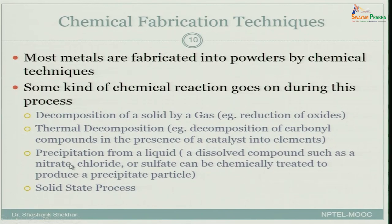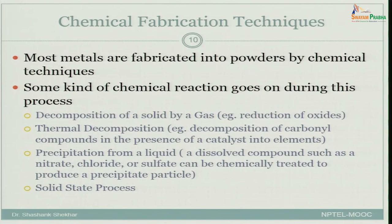Another chemical method is precipitation from a liquid. A dissolved compound such as nitrate, chloride, or sulphate can be chemically treated to produce a precipitate. You dissolve the material into solution and then change conditions so that the metal or oxide precipitates out. Because this takes place by nucleation and growth, it results in fine particulates at many different locations.